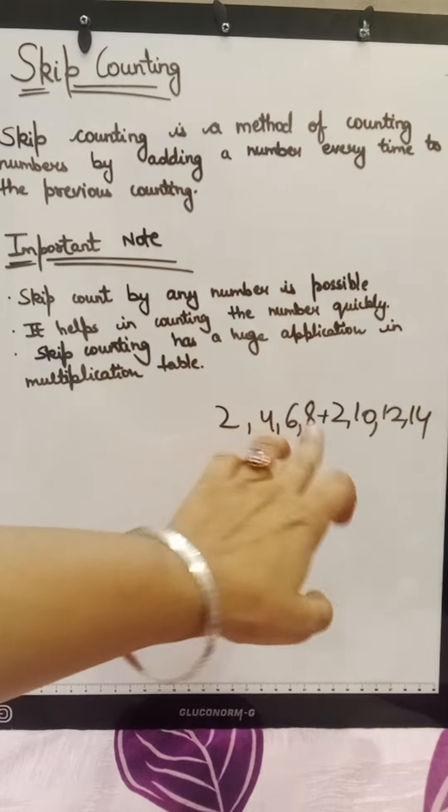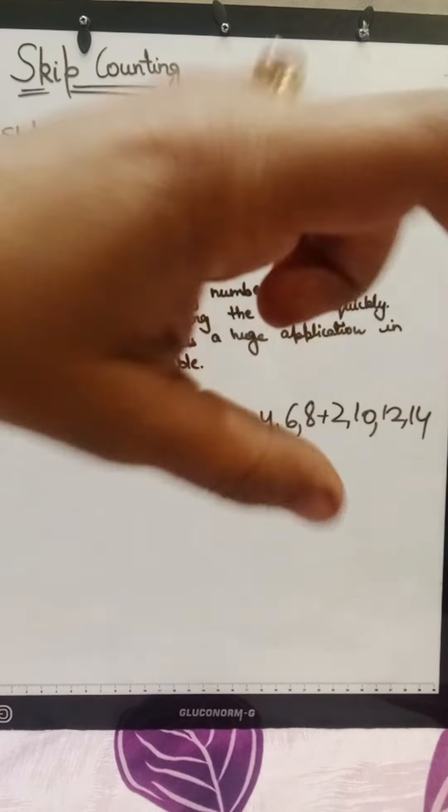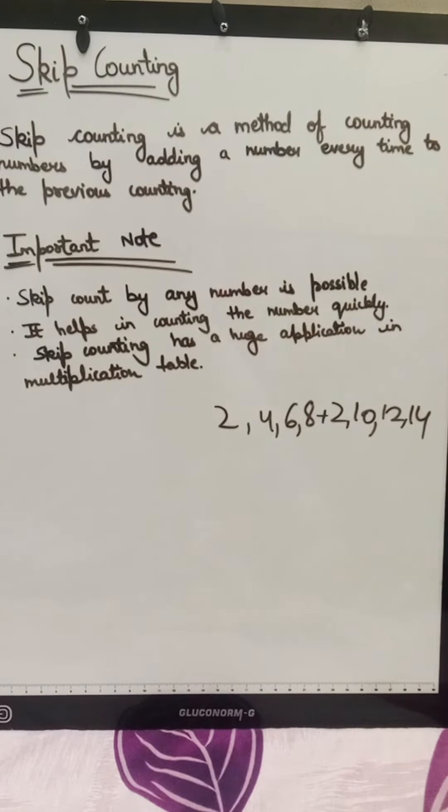Now, we know that 2 plus 2 is 4, 4 plus 2 is 6. Skip counting by 2 has become a table of 2. Do you understand?